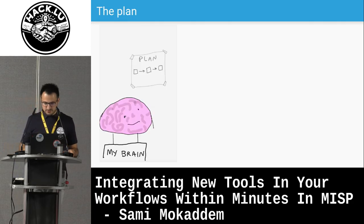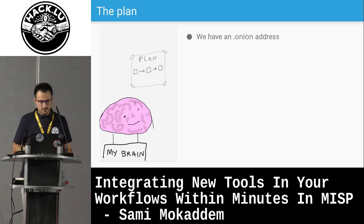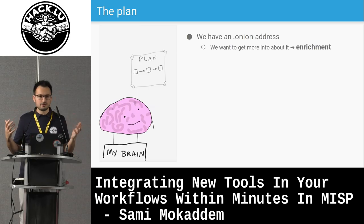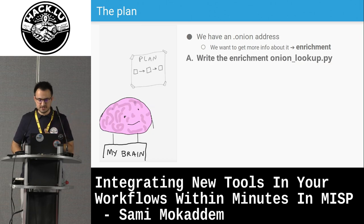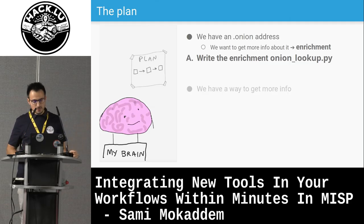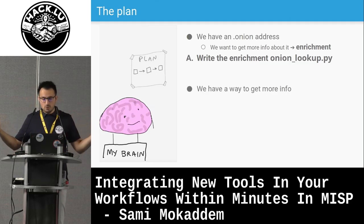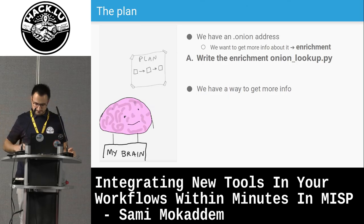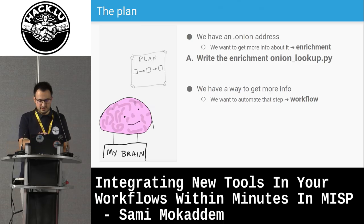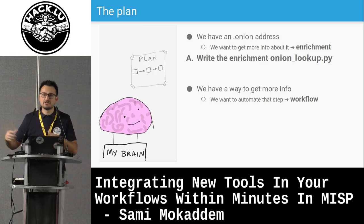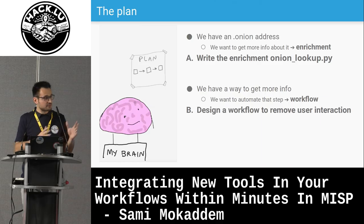Now, what's the plan for this presentation? We have one or many onion addresses. We want to get more information about that onion, so we'll use the enrichment system. Our first task will be to write an enrichment module called onion lookup. Then, we want to automate that step so we don't need to do anything — the system will automatically detect a new onion address that needs to be enriched. As a second step, we'll design a workflow to remove user interaction.